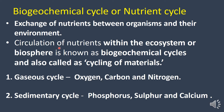What is a bio-geochemical cycle? It is the circulation of nutrients within the ecosystem. Nutrients circulate within the ecosystem and biosphere. There are two types of biogeochemical cycle: gaseous cycle and sedimentary cycle.